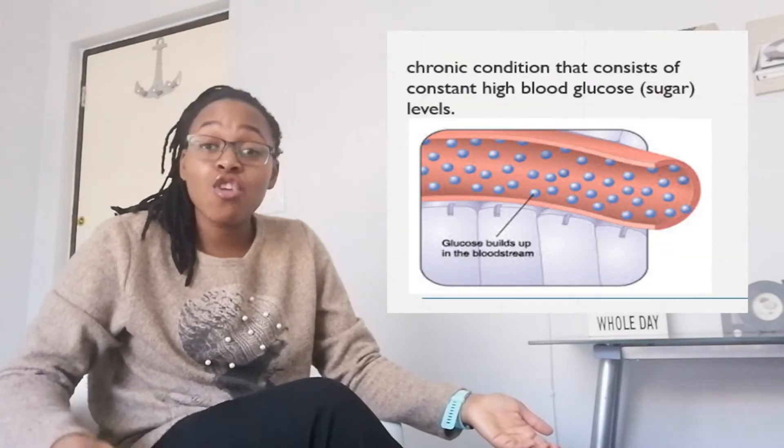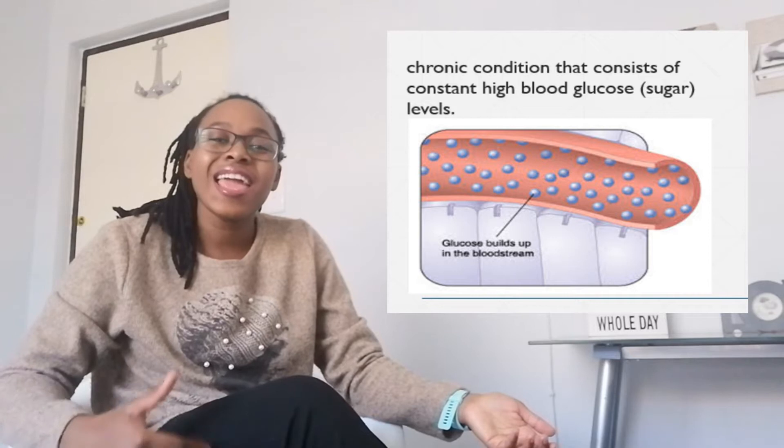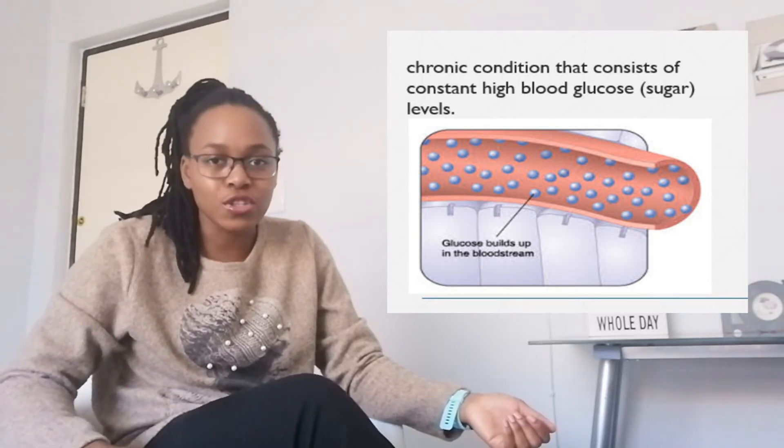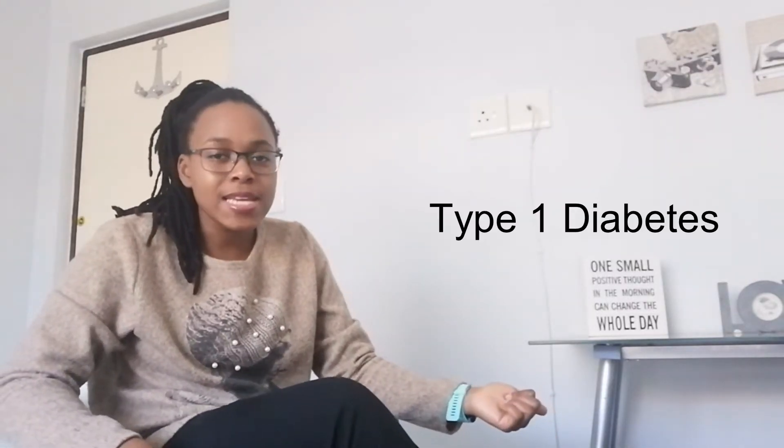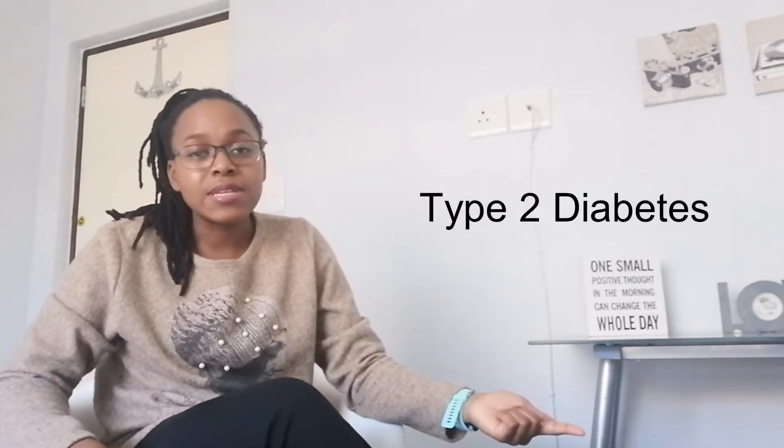Diabetes is a chronic condition that consists of a constant increase in your blood glucose levels. It has four specific types: mainly type 1 diabetes, type 2 diabetes, gestational diabetes, and other specific types. The one that we generally know or hear about is type 2 diabetes, also referred to as diabetes mellitus or sugar diabetes, because of different lifestyle factors that cause this type of diabetes.